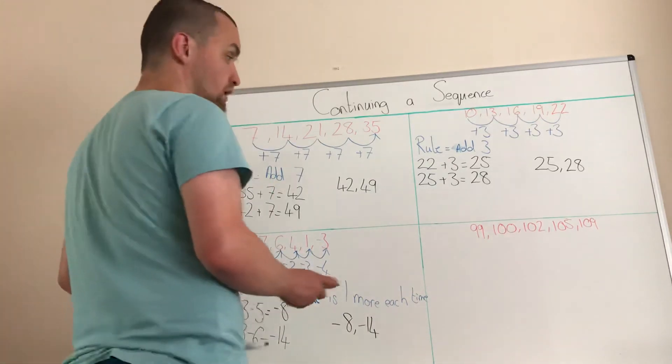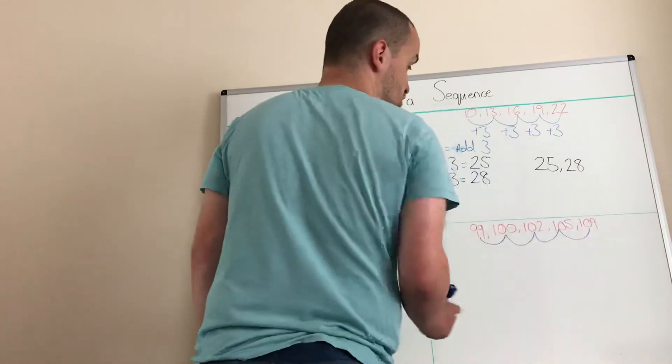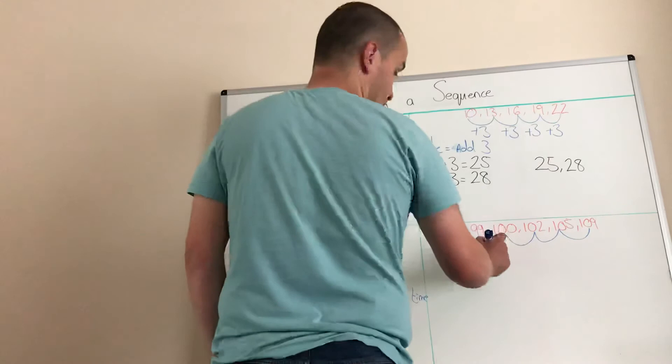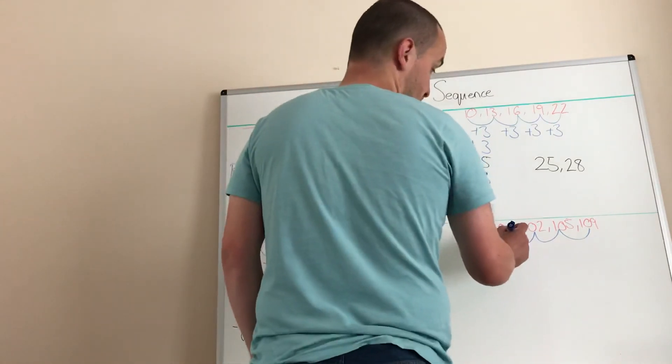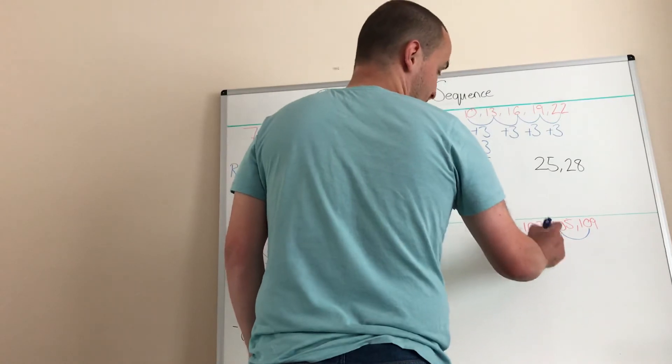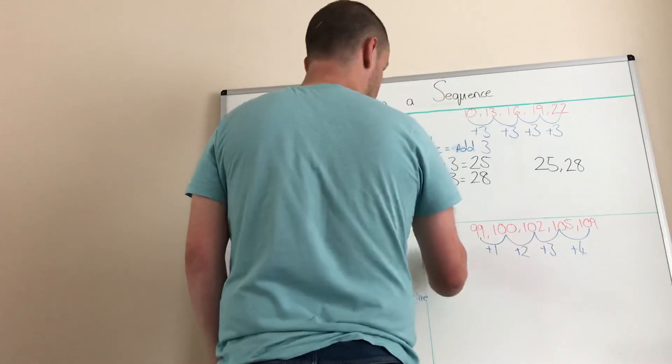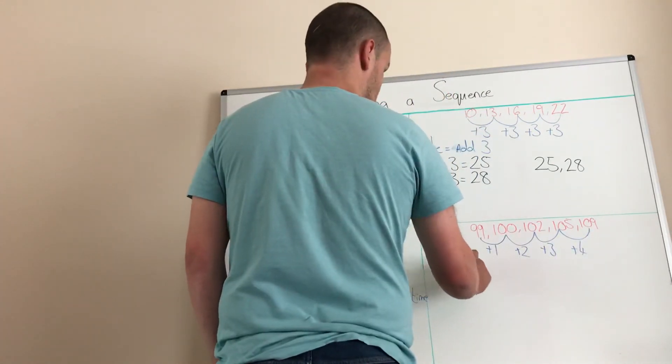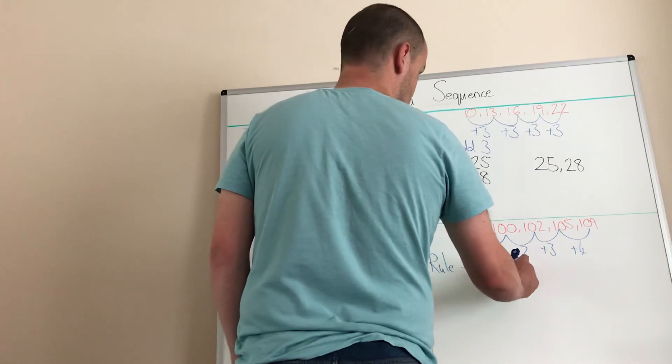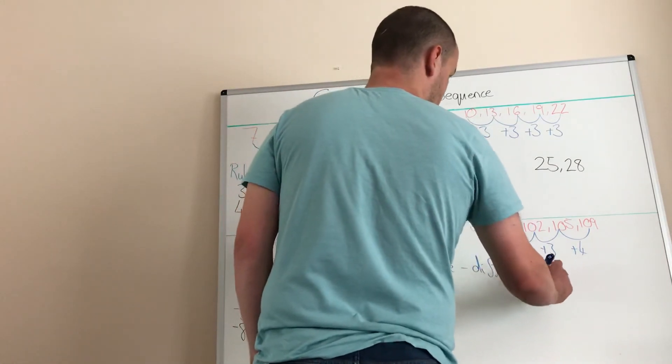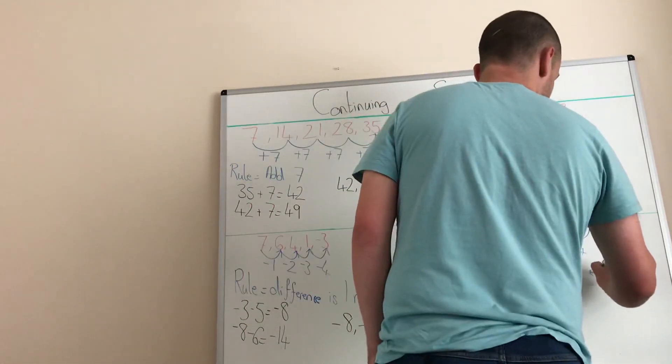Right, next one. Last one for you. So we've got 99, 100, 102, 105, 109. So we're going to add one. We're going to find the rule first, aren't we? So we're going to add one to there. We're going to add two to there. We're going to add three and we're going to add four. So our rule is that the difference is one more each time.